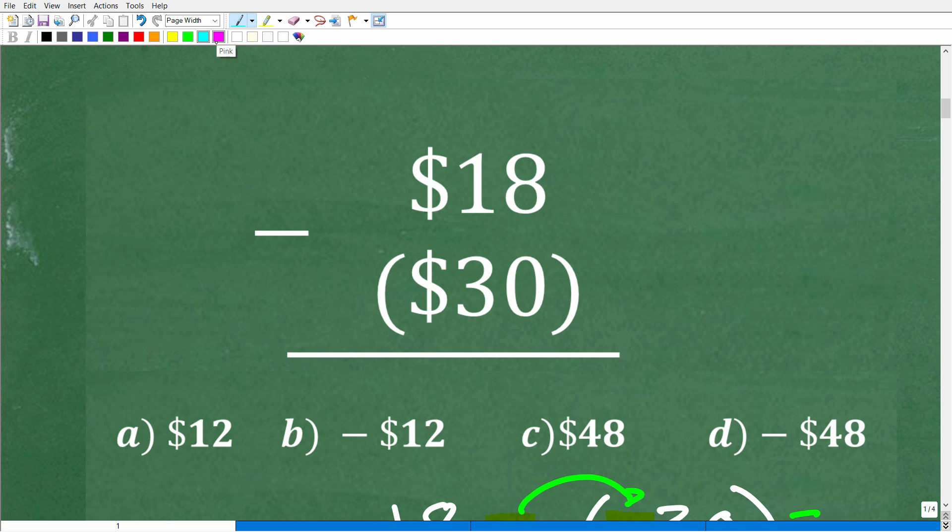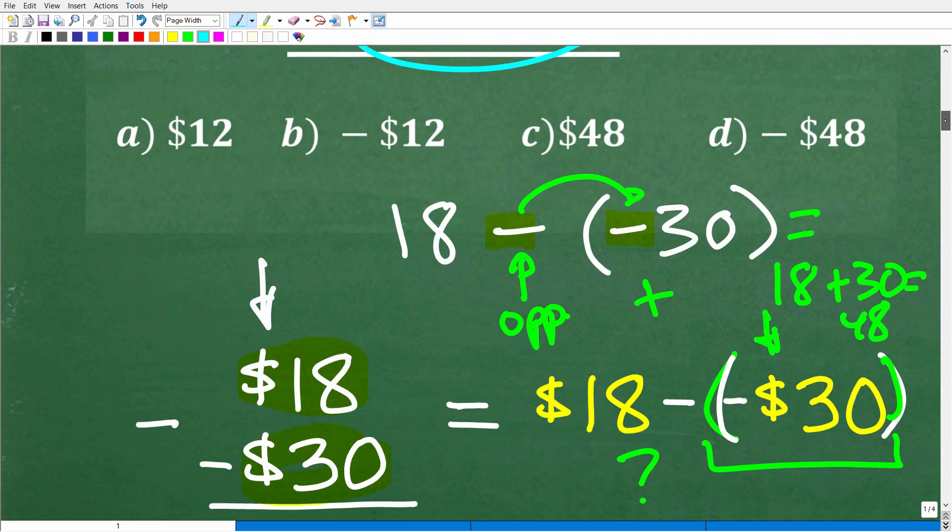Because here we want to think of this again as $18 minus this right here. We want to think of as $18 minus a $30 or $18 minus a $30 like this. So hopefully this makes sense.